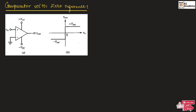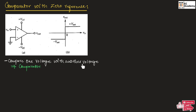Usually, we want to compare one voltage with another voltage to see which one is larger. For this purpose, we can use a comparator. A comparator is used to compare one voltage with another voltage to see which voltage is larger. It is similar to an op-amp — it has two inputs: an inverting terminal and a non-inverting terminal, and it has one output.